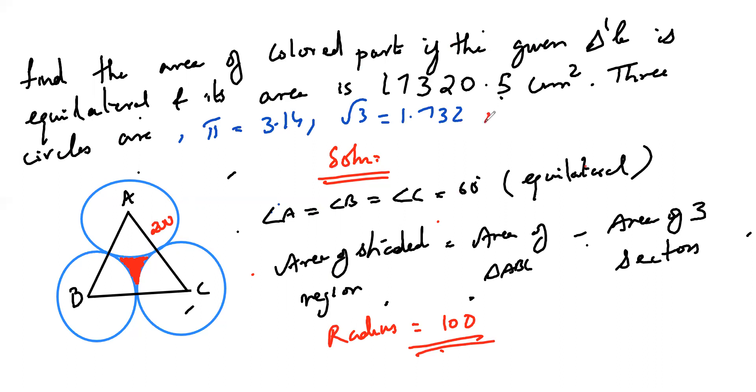And in the question I forgot to mention here, the radius of the circle is half of the side of the triangle. That is one, because the question is too big so that I didn't mention in this. So radius is 100.